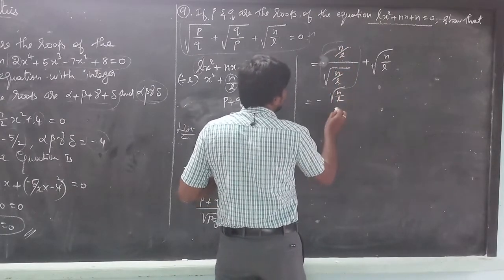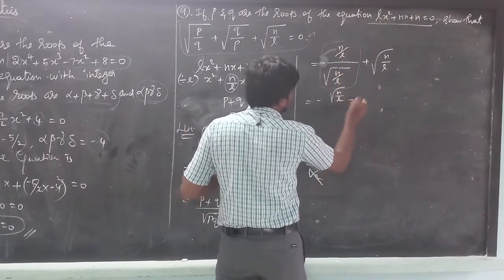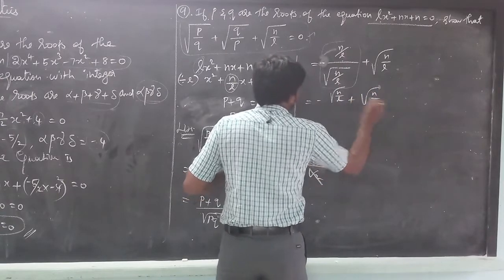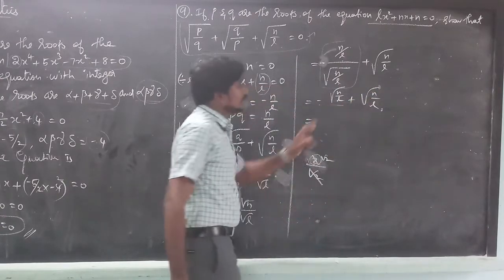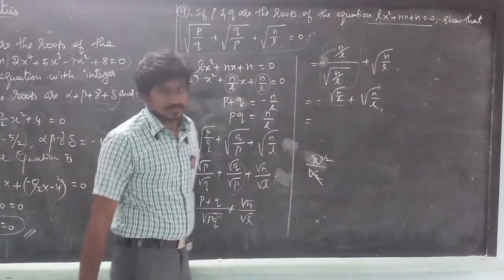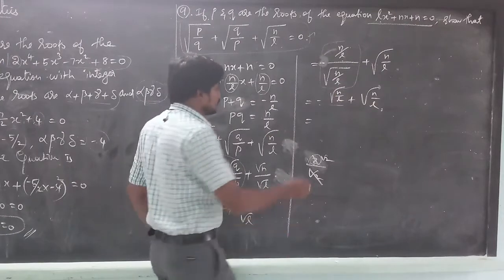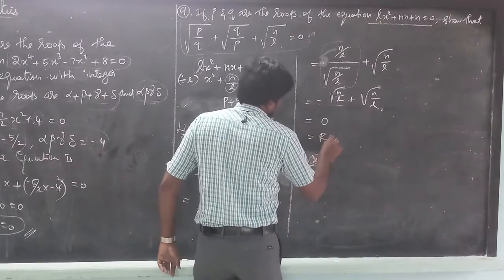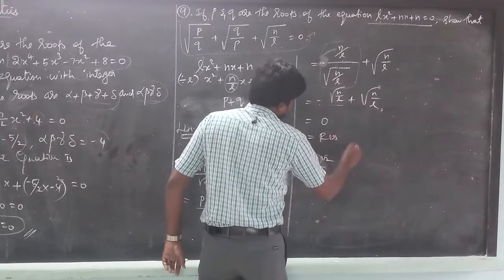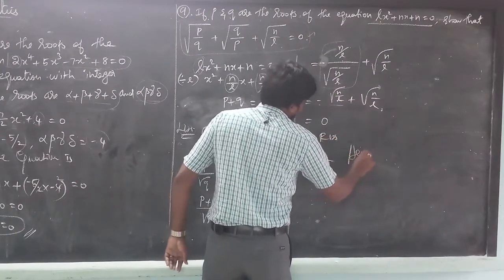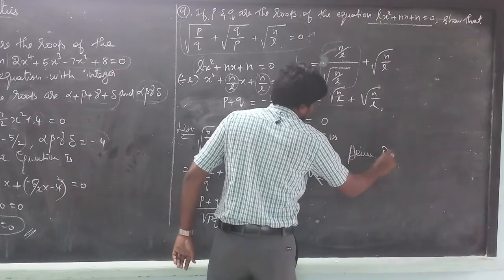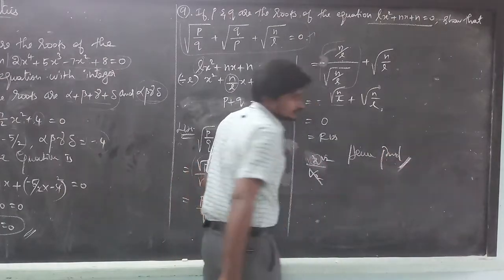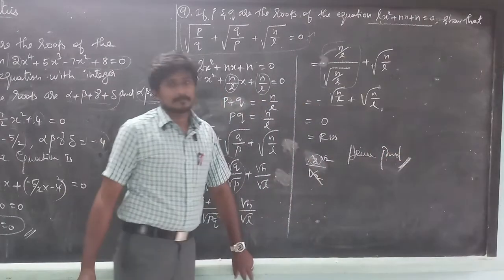So we have -√(N/L) + √(N/L), which equals zero. This is equal to the right-hand side, hence the proof is complete.